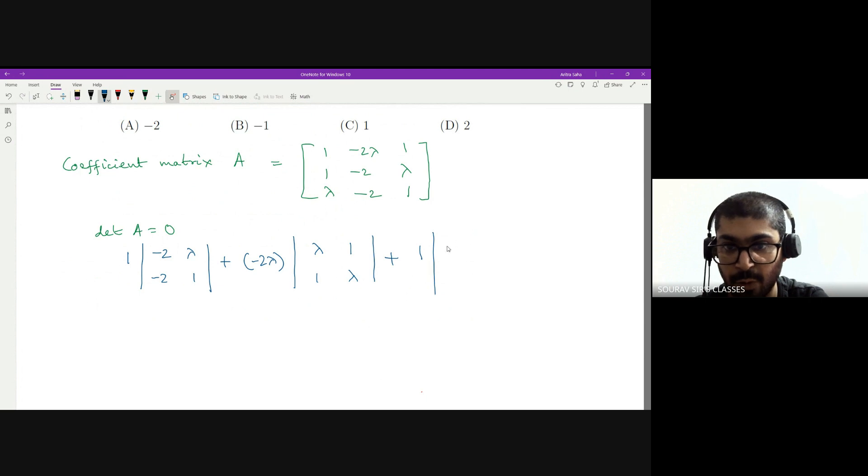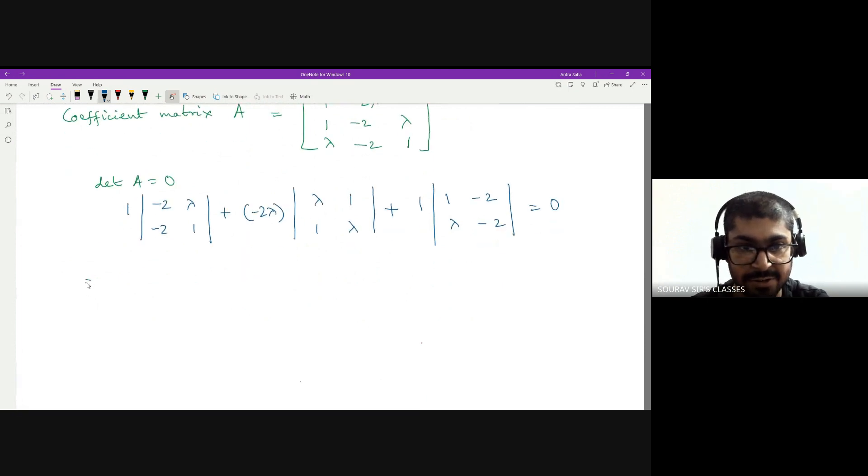This should be equal to zero. Now we solve this large equation. So this will be 1 into -2 minus 2 lambda, minus 2 lambda times lambda squared minus 1.